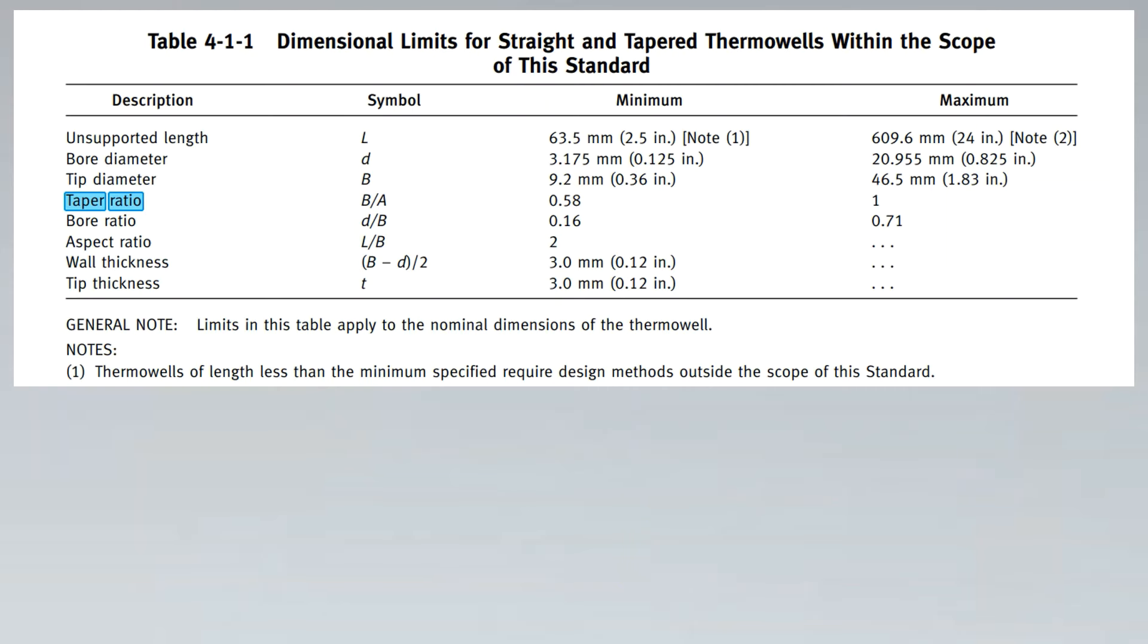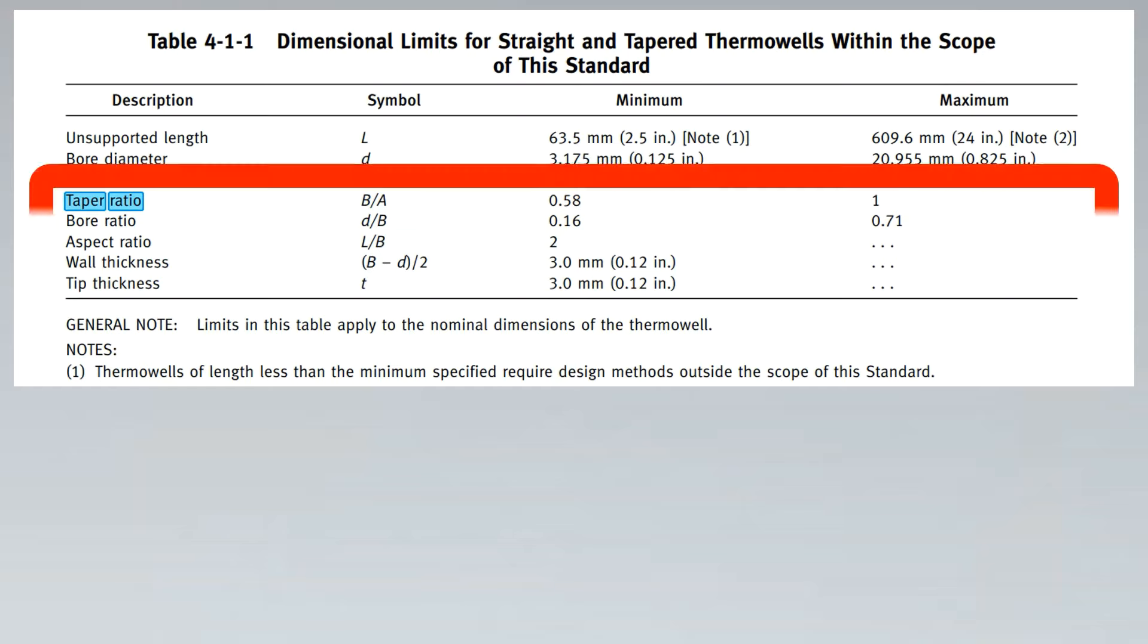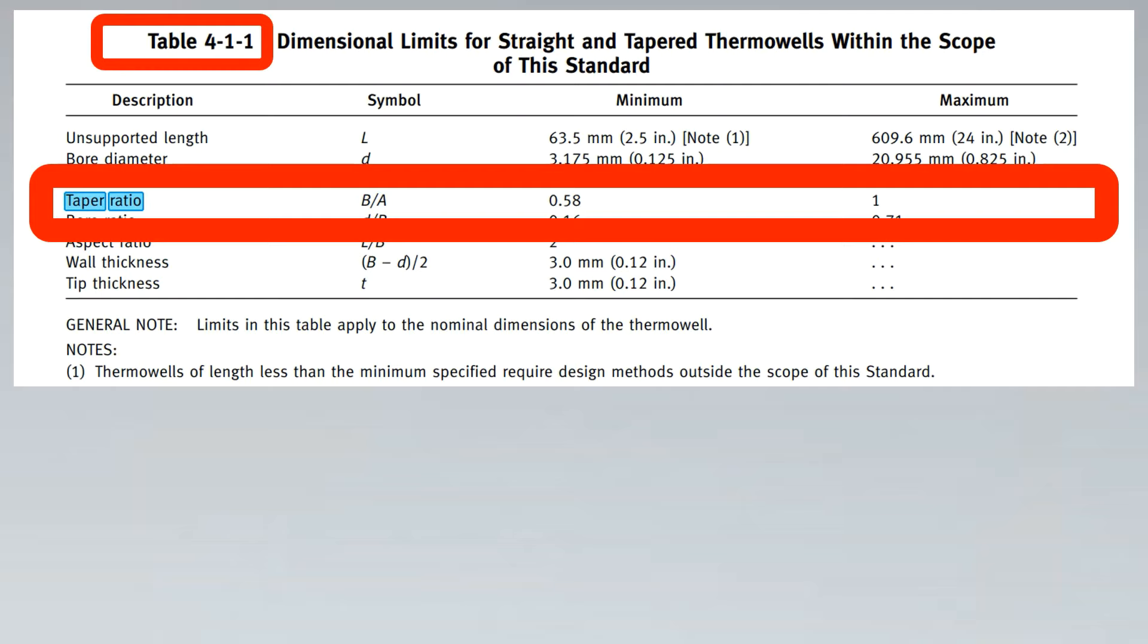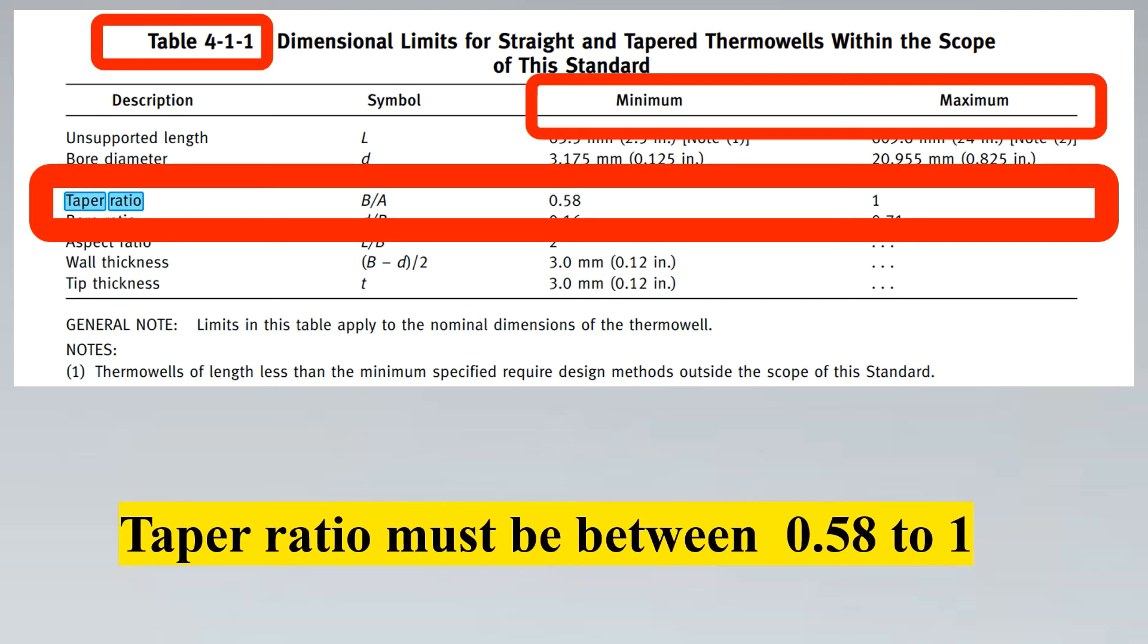Now, first we look into from where have we found this taper ratio. So ASME PTC 19.3 is the standard. We suggest that the taper ratio should be between 0.58 to 1. This is from the table which is 4-1-1, this table, and it says the minimum and the maximum criteria. So you see here, the taper ratio is from 0.58 to 1. Remember, these values are very important. And because it's a ratio, it has no units to it.